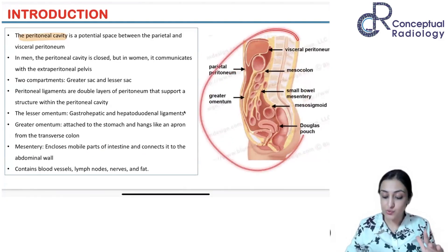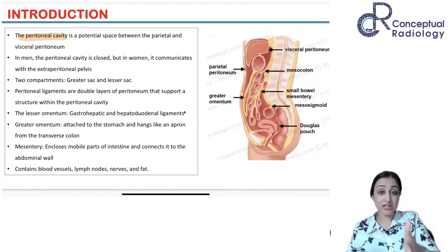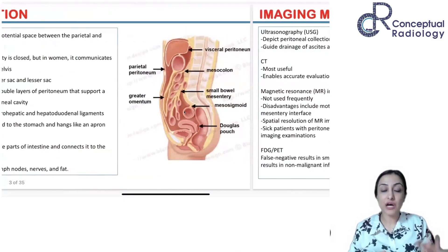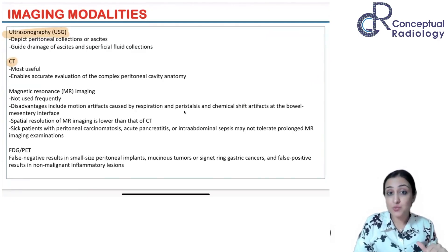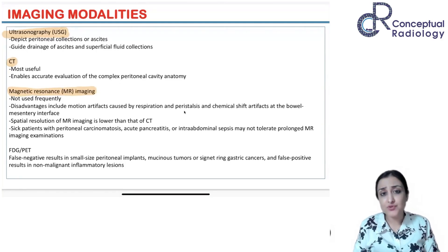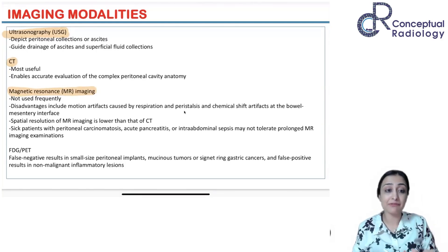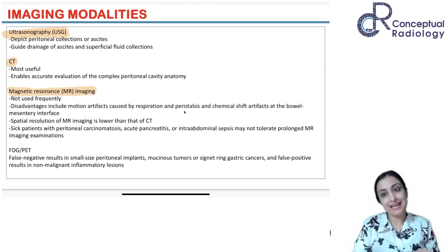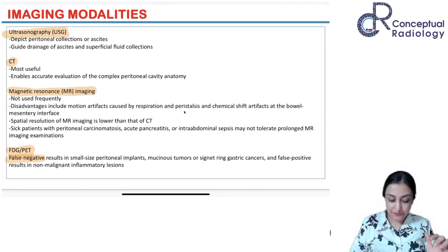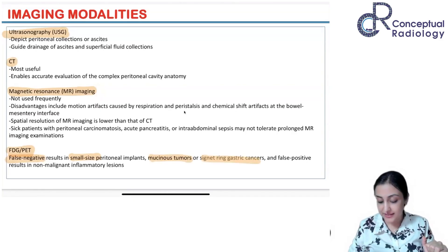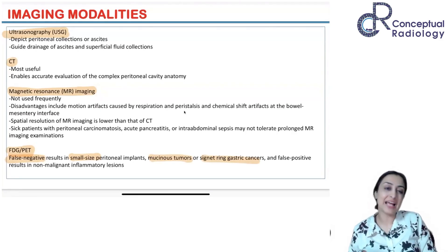This is a very nice diagram from Radiology Assistant showing in sagittal section what each part means. For theory answers: ultrasound is mainly for drainage and ascites; CT is the most useful and is what we will focus on. MRI is not very useful due to motion artifacts and chemical shift artifacts at the bowel-mesentery interface, though diffusion-weighted imaging can help pick up small deposits. FDG-PET is very useful for peritoneal implants and lymphomas, but can be false negative for small mucinous tumors and signet ring cell cancer, and false positive in TB.